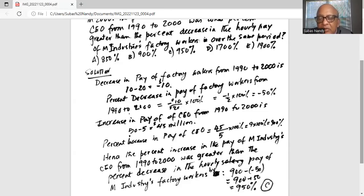So 900 minus minus 50 is same as 900 plus. Two minuses make it plus. So 900 plus 50 is equal to 950%.